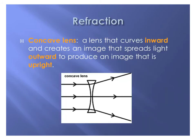For refraction we looked at two different types of lenses. A concave lens curves inward, making it thinner in the center than at the edges. It spreads light outward, so the rays of light on the other side of the lens never meet. Because of this, a concave lens always produces an image that is upright.